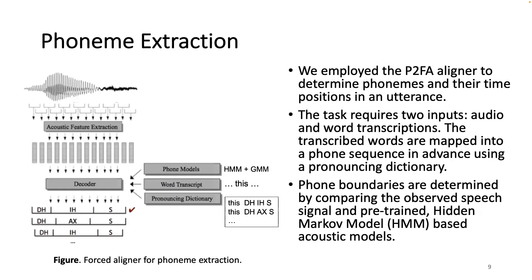We employ the Montreal Forced Aligner to determine phonemes and their time positions in an utterance. The task requires two inputs: audio and word transcriptions. The transcript words are mapped into a phoneme sequence in advance using a pronouncing dictionary. Frame boundaries are determined by comparing the observed speech signal and pre-trained hidden Markov model based acoustic models. In force alignment, the speech signal is analyzed as a successive set of frames, with alignment of frames with phonemes determined by finding the most likely sequence of hidden states given the observed data and the acoustic models. Then we store a sequence of pulses for each phoneme in the dictionary based on the alignment.